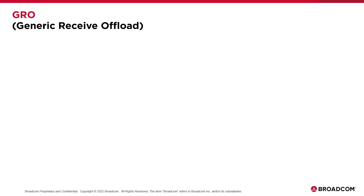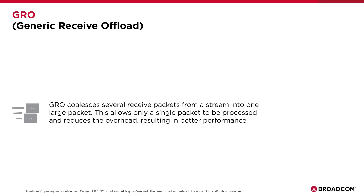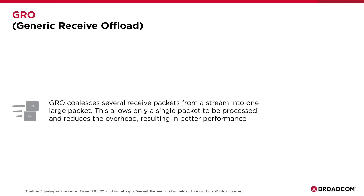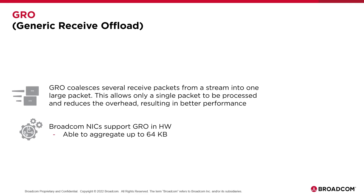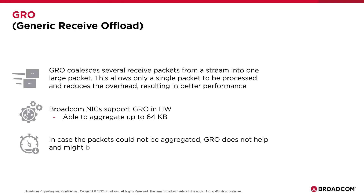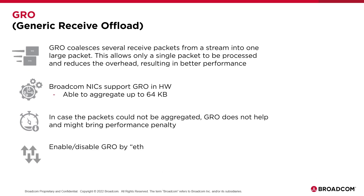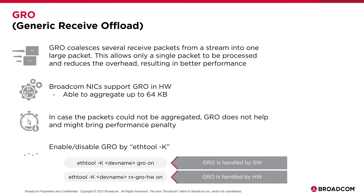A couple of other important features: GRO stands for Generic Receive Offloading. GRO coalesces several receive packets from a stream into one large packet. If packets were broken down to MTU size but originally were a large data chunk, GRO reduces processing overhead by combining them back into a single packet and passing it up the kernel stack. This can result in much better performance and lower CPU utilization depending on the workload — when it helps, it helps quite a bit. Broadcom NICs support GRO in hardware and can aggregate up to 64 KB. However, in certain workloads where packets can never be aggregated, GRO can actually bring a performance penalty, so this is something to keep in mind.